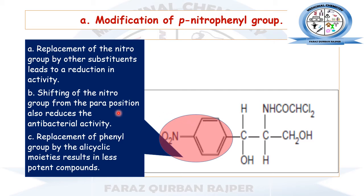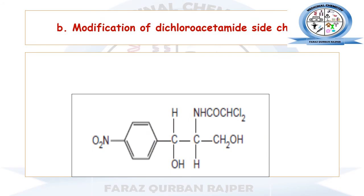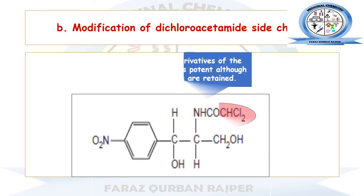If we replace the phenyl ring with any heterocyclic moiety, it will also result in a compound with less potency in comparison to chloramphenicol. So substituting the phenyl ring with any other heterocyclic compound will give a derivative of chloramphenicol that has less potency compared to the parent drug.